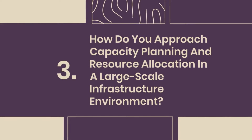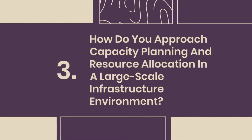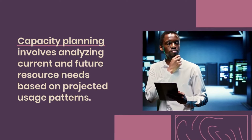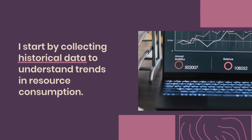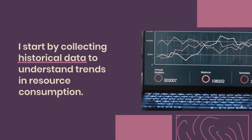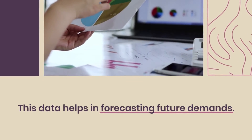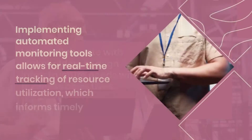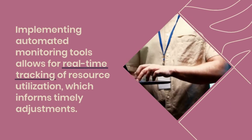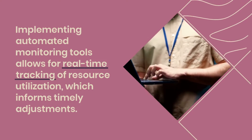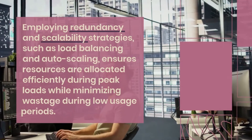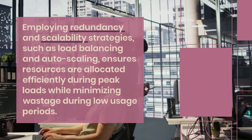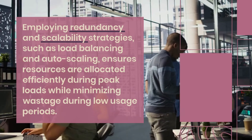Question 3: How do you approach capacity planning and resource allocation in a large-scale infrastructure environment? Capacity planning involves analyzing current and future resource needs based on projected usage patterns. I start by collecting historical data to understand trends in resource consumption, which helps in forecasting future demands. I also collaborate with stakeholders to align infrastructure needs with business objectives. Implementing automated monitoring tools allows for real-time tracking of resource utilization, which informs timely adjustments.